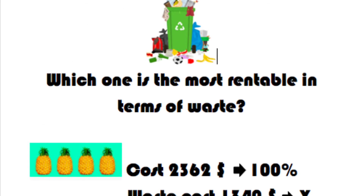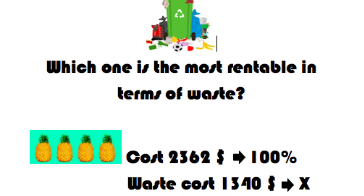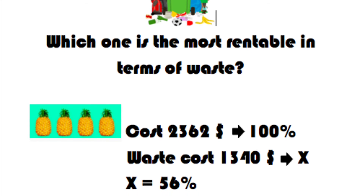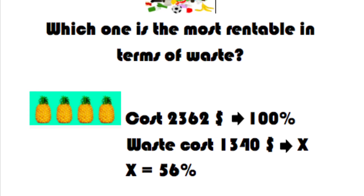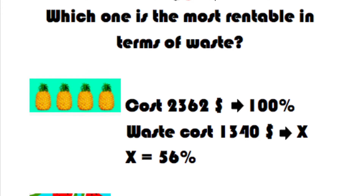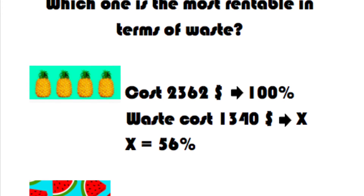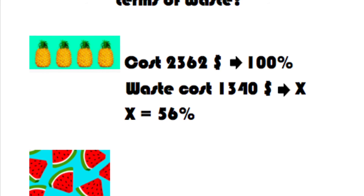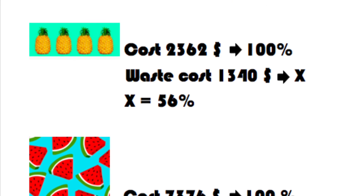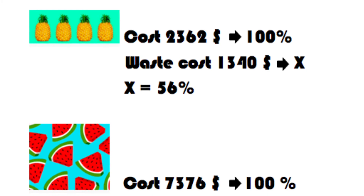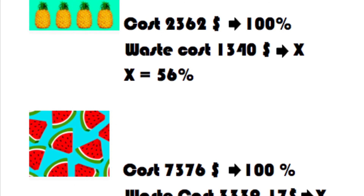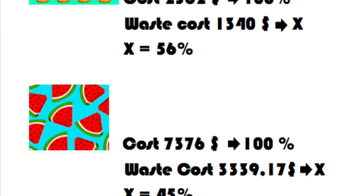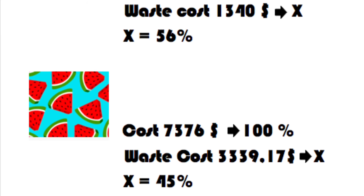So which one is the most rentable? The most rentable in terms of waste is the juice of watermelon. Because the cost of the pineapple is 2,362 pesos, which is 100 percent of the cost. The waste cost of 681 grams is 1,340 pesos — that means 56 percent of the initial cost. On the other hand, the cost of the watermelon is 7,376 pesos, which is 100 percent of the value. The waste cost of 1,120 grams is 3,339 pesos — that means 45 percent of the initial cost.